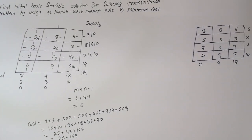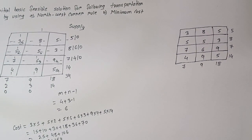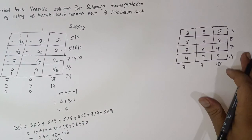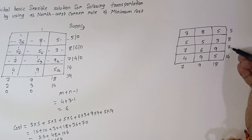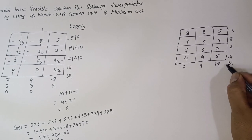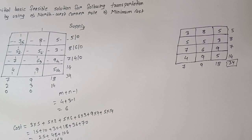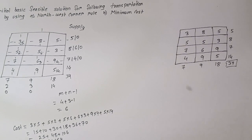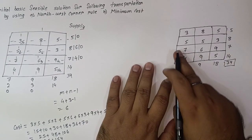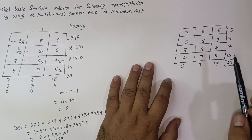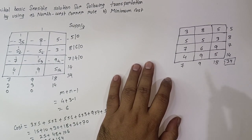Now let's solve this problem using the Minimum Cost Method. In this method we select the cell with the least (minimum) cost value. The problem is balanced: supply is 5 + 8 + 13 + 20 = 34 and demand is also 34. The Minimum Cost Method is also known as the Least Cost Method. We select the cell with the lowest value; here the minimum is 3, and there are two cells with value 3 — we can select either one.